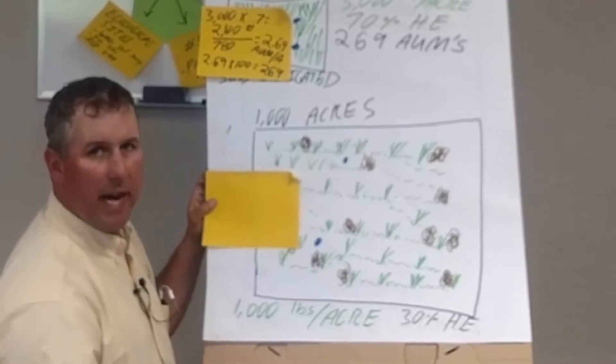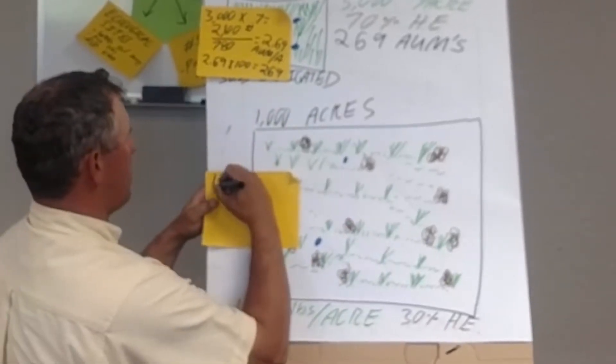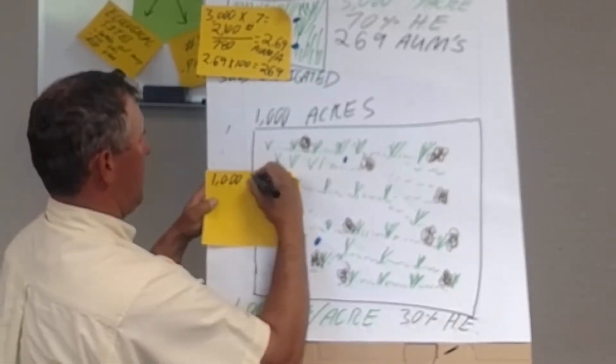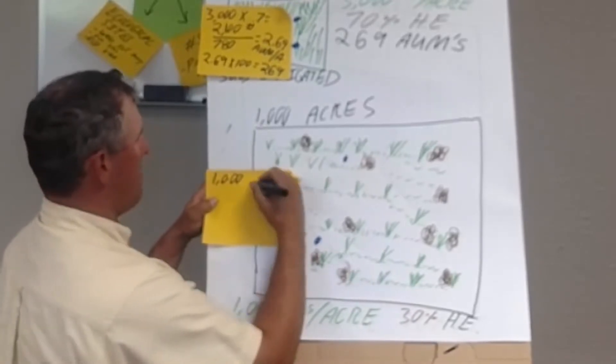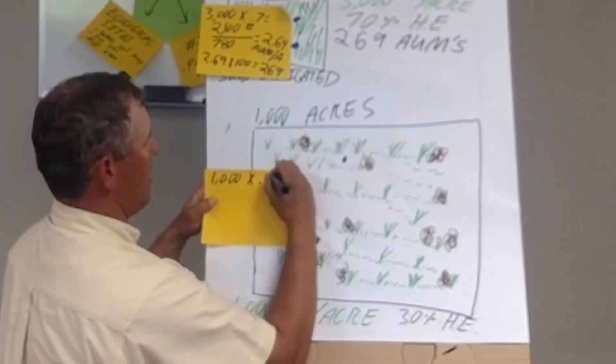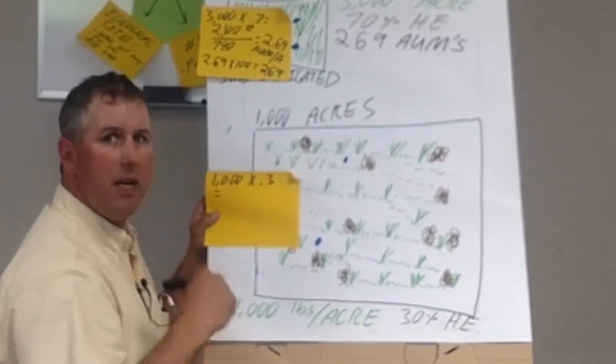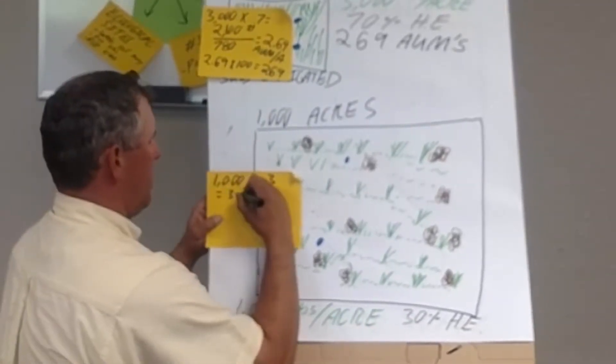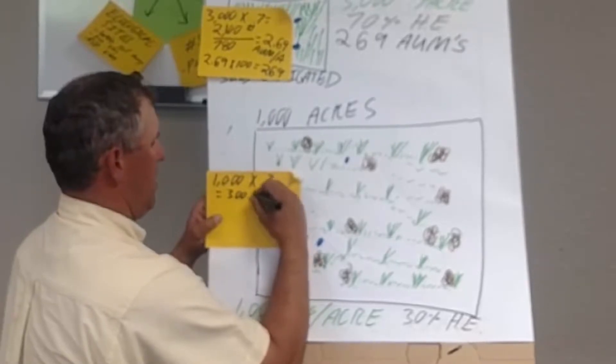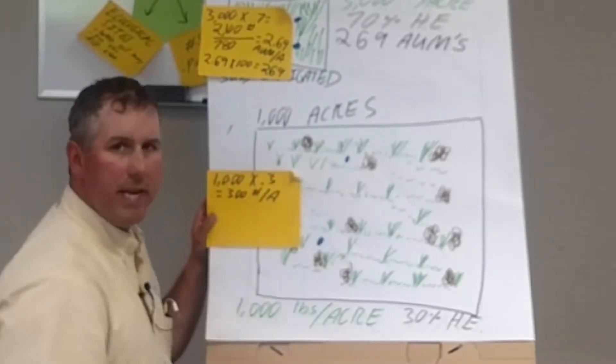So this larger, less productive pasture we said was 1,000 pounds per acre at a 30% harvest efficiency. That means we're going to put 300 pounds in the belly of our grazing animals from each acre.